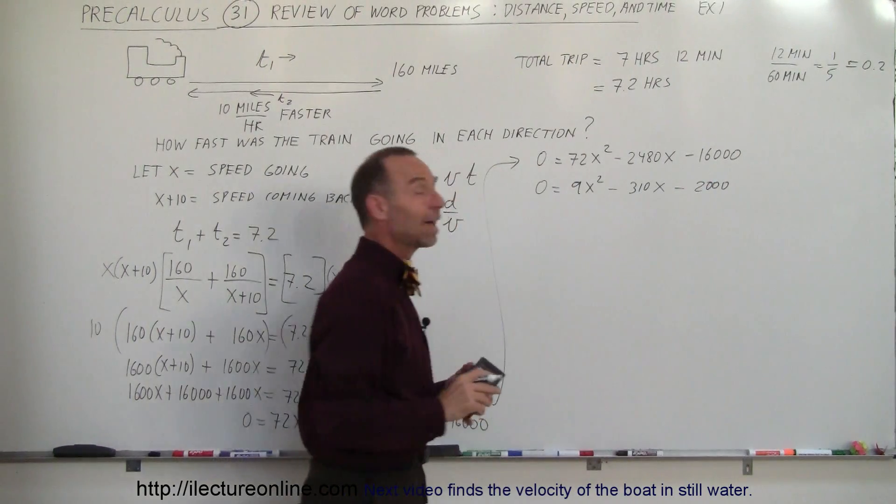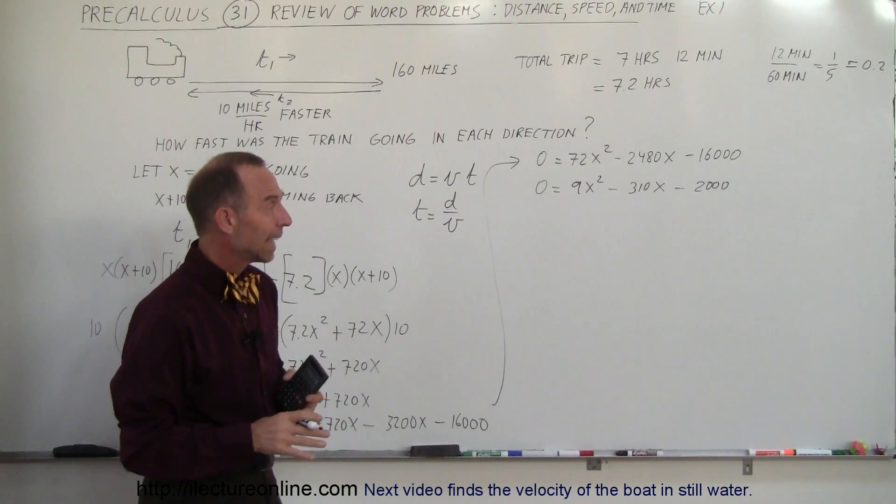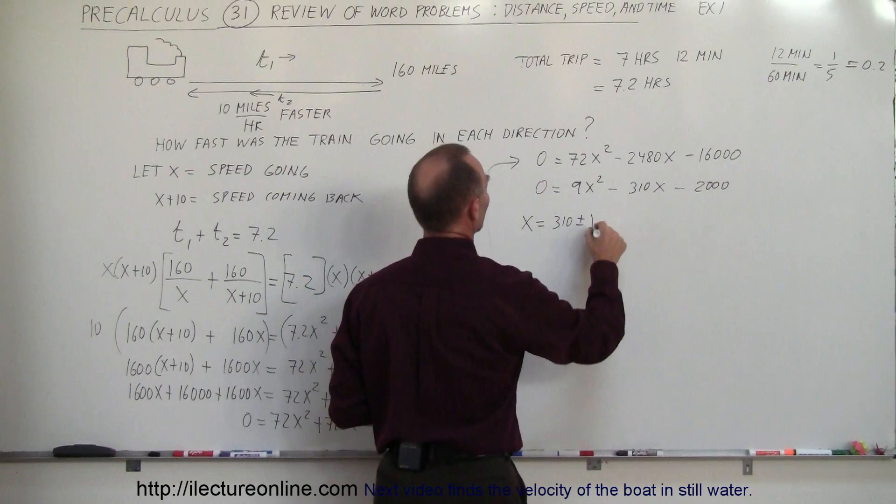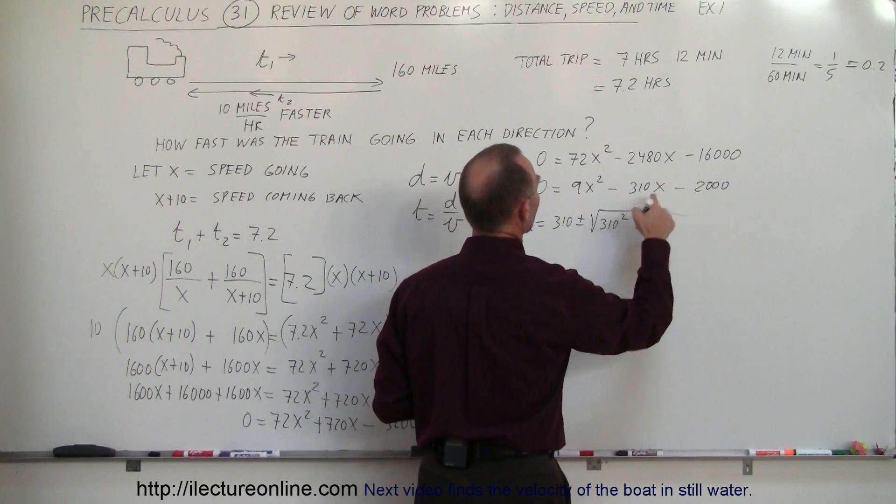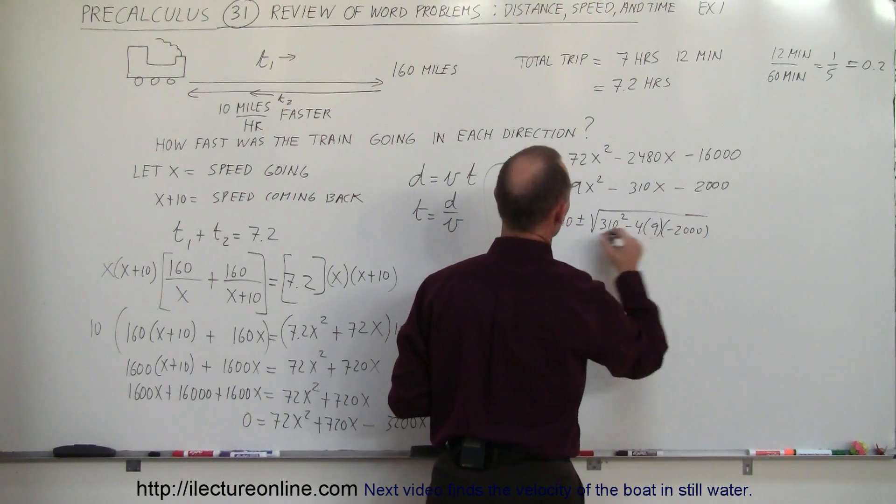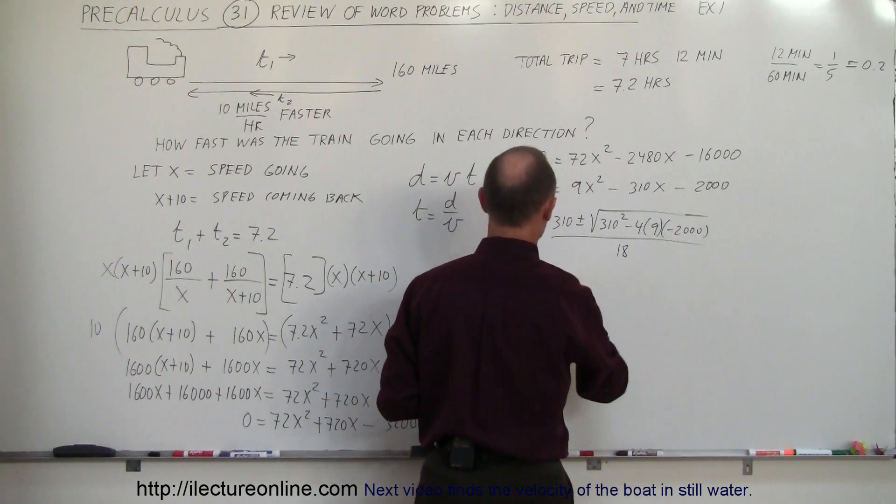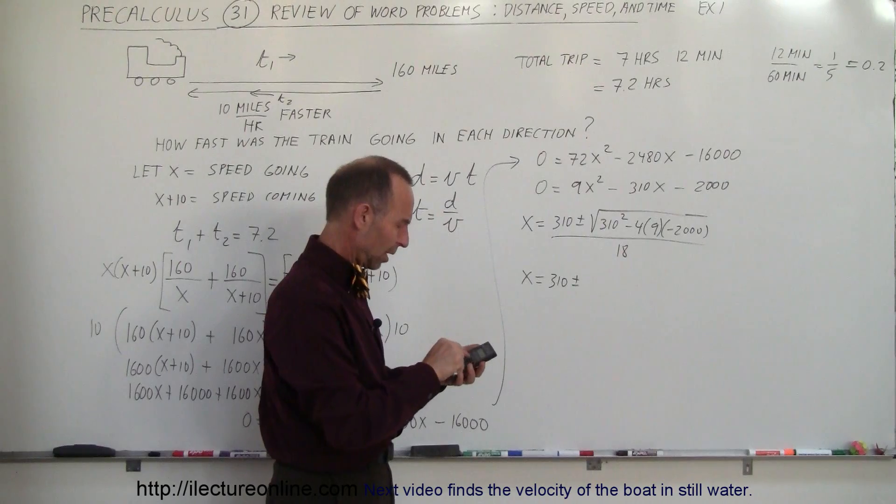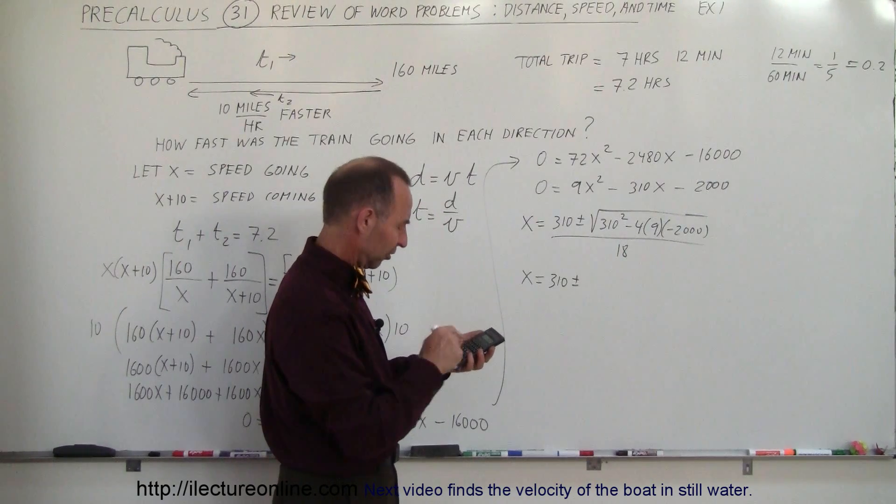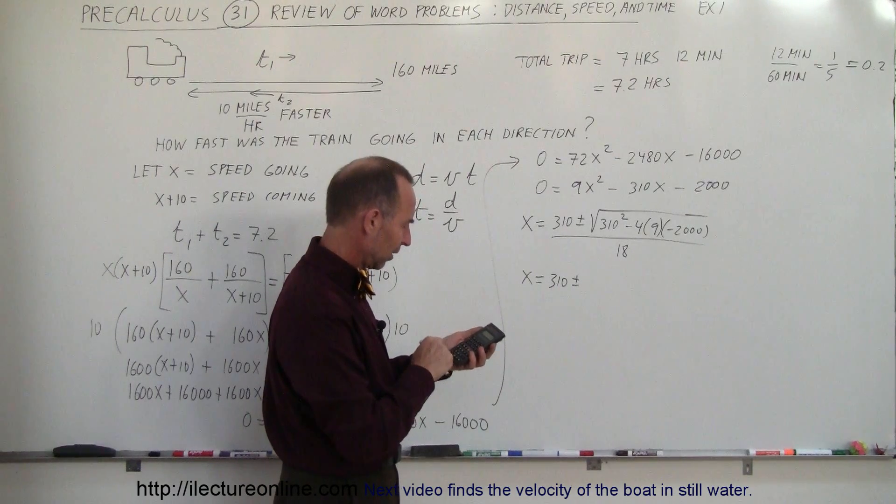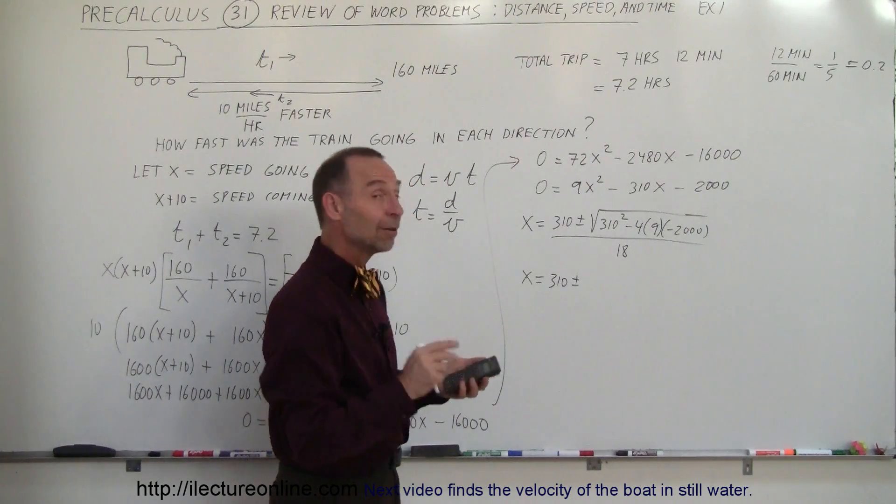Now we have a quadratic equation. It's a little simpler. Let's go ahead and use the quadratic formula. So x equals 310 plus or minus the square root of 310 squared minus 4 times a times c, which is minus 2,000, all divided by 2a, which is 18. So x equals 310 plus or minus, 310 squared plus, because the minus cancels out, plus 36 times 2,000 equals, take the square root of that, gives me 410.